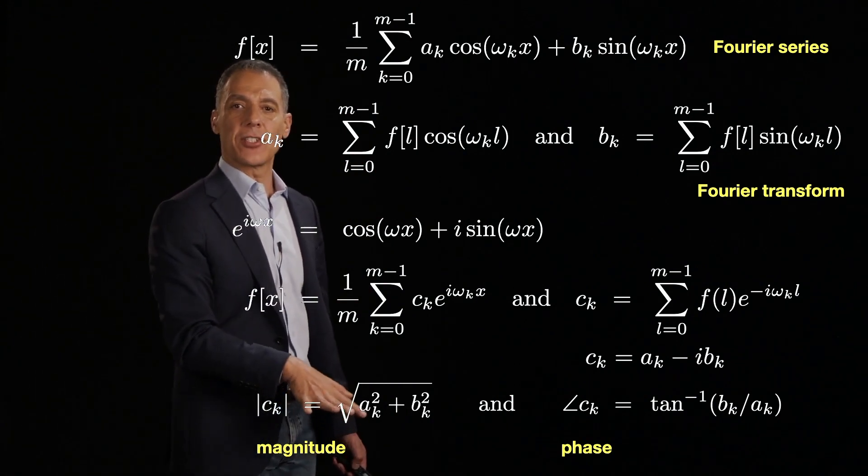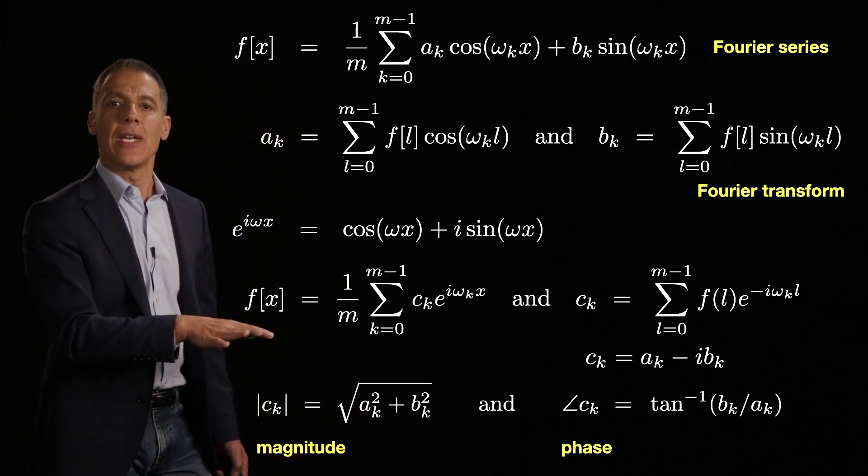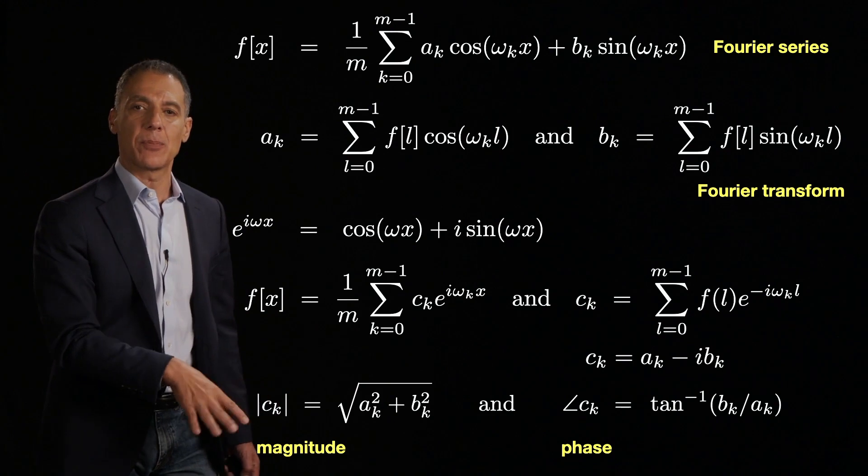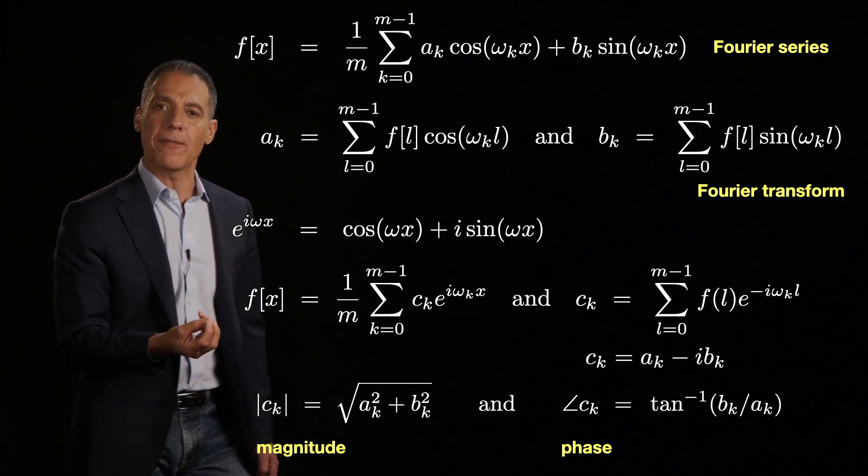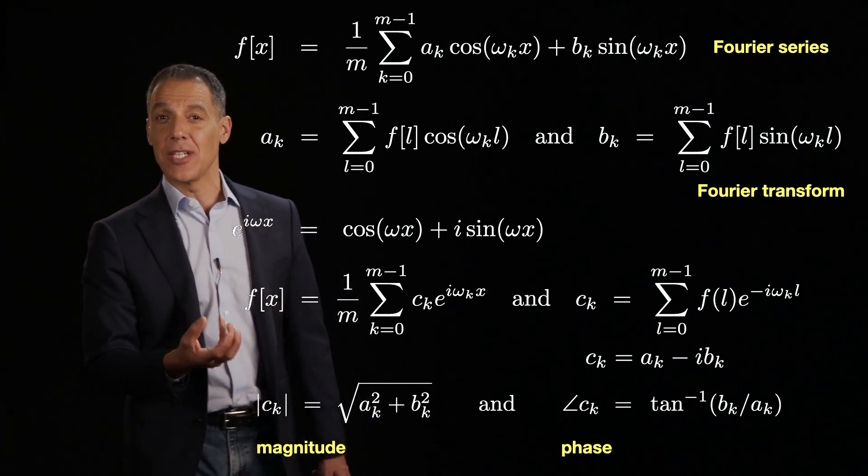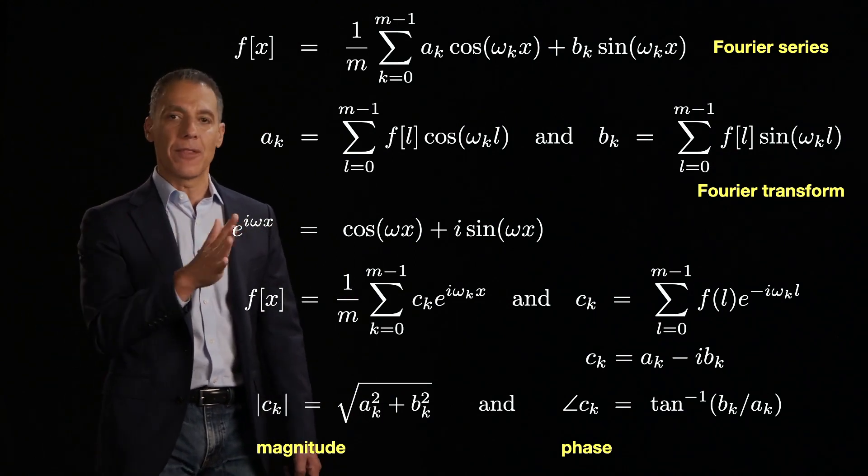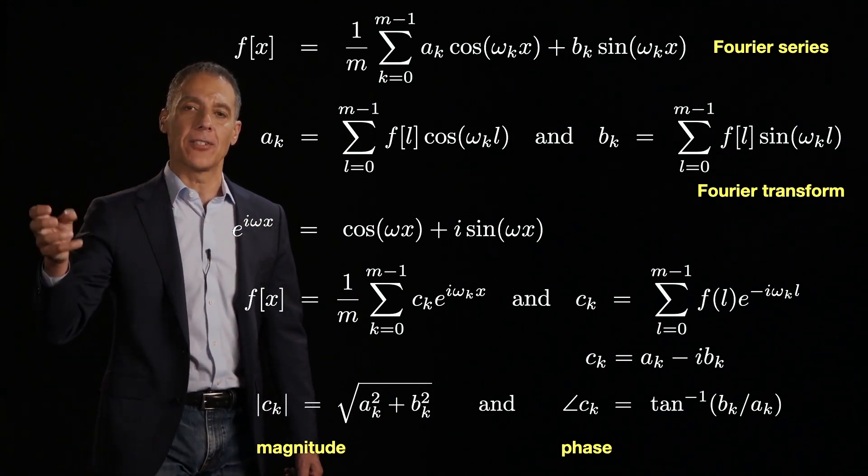And this representation is going to turn out to be particularly useful in computer vision and image processing and image analysis because more often than not, we are interested in how much, regardless of the phase, of each harmonic is there.